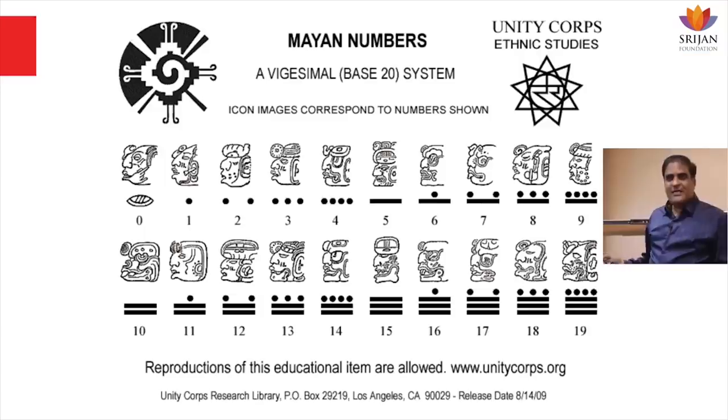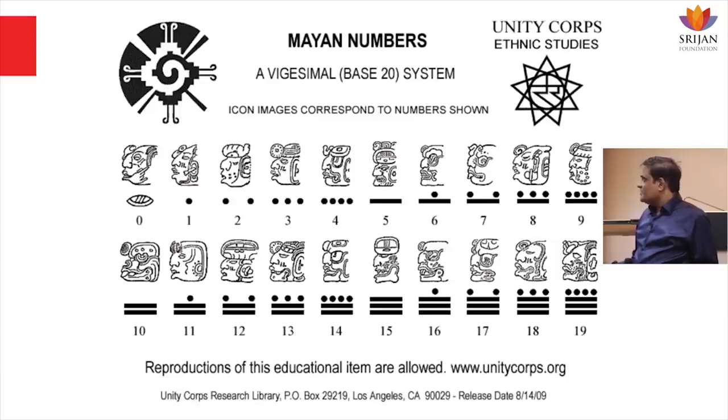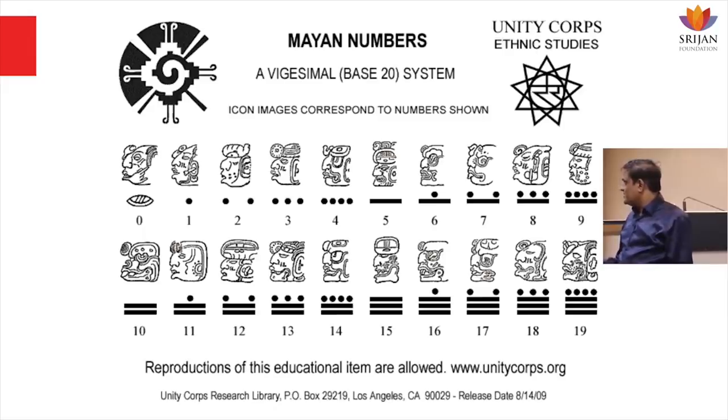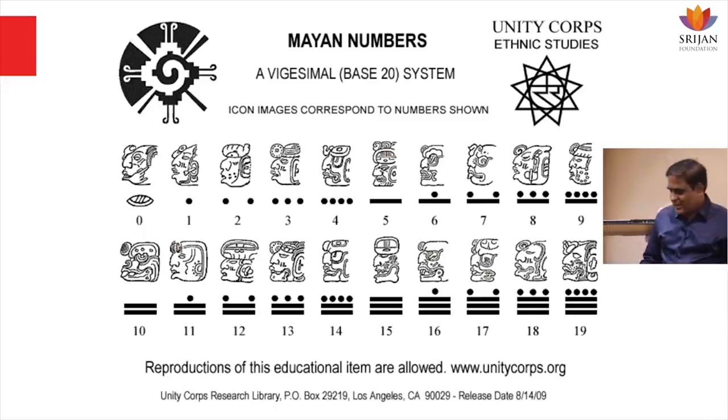Mayans — again what we see is, 0 is added in the picture. Here again you see they are basically using fingers — instead of a finger they are putting a dot. When you have four fingers, they represent through four dots, and then five — one hand — they make a line. It continues up to digit 20. So nothing great — everybody is following a similar structure, similar pattern. So what is missing here? Till now, India is missing. Of all the civilizations, India is missing.